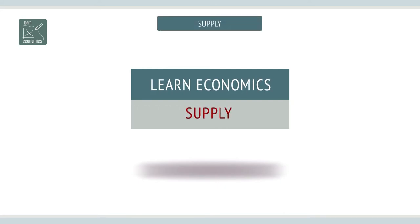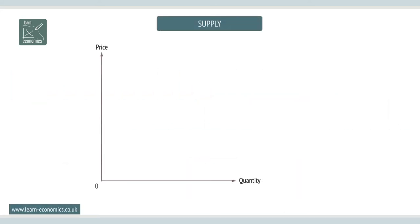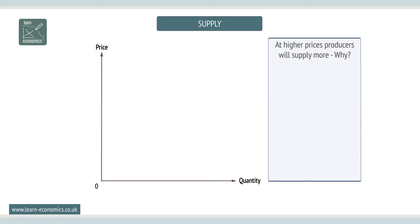Supply curves typically slope up from left to right. Price and the quantity supplied are positively related — at higher prices, producers will supply more.